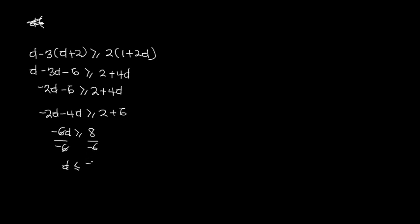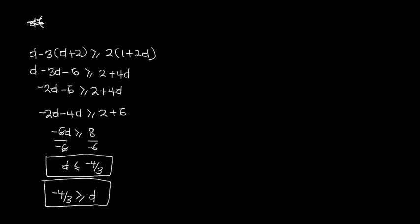Dividing by negative 6: the sign changes from greater than or equal to, to less than or equal to. So d is less than or equal to 8 over negative 6, which simplifies to negative 4 over 3. If you prefer to write the fraction first, you must flip the sign so it faces x again, giving negative 4 over 3 greater than or equal to d — both forms are correct, but it is preferred to write the variable on the left. Thank you for watching this linear inequalities video. In the next video we'll look at quadratic inequalities.